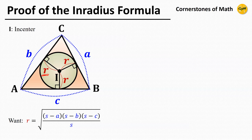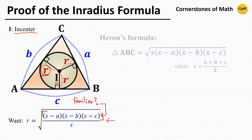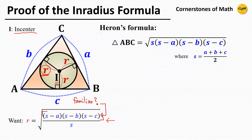We have to find this length R, where this point I is the in-center, the center of the inscribed circle of triangle ABC. Now let's take a look at the formula that we want to prove. Doesn't this part look familiar? Can you answer where you have seen this expression? Well, I guess many of you might remember Heron's formula, the formula to compute the area of the triangle when three side lengths are given.